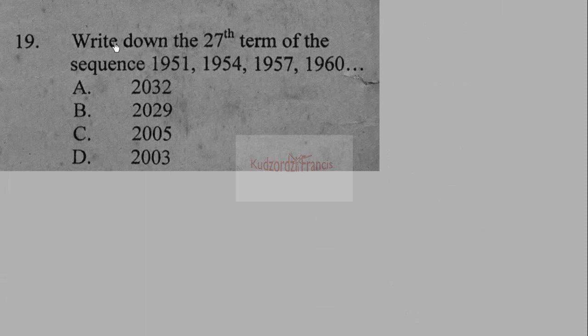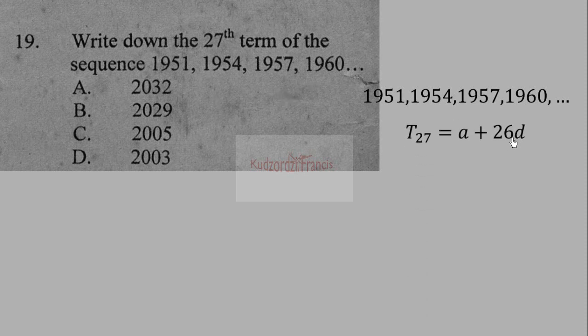Question 19: write down the 27th term of the sequence 1951, 1954, 1957, 1960. The 27th term equals the first term plus 26 times the common difference. This is an arithmetic sequence because we are adding a constant of 3 each time.